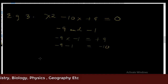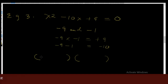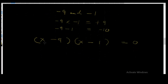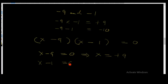Now let's create the brackets. We have (x - 9)(x - 1), all equal to zero. Each bracket is also equal to zero. If you multiply the elements out you get the expression x² - 10x + 9. So x - 9 = 0, therefore x = +9. Similarly x - 1 = 0, therefore x = +1.